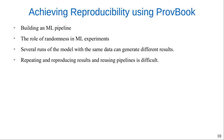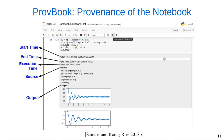Building a machine learning pipeline requires constant tweaks in the algorithms and models and parameter tuning. The role of randomness in machine learning experiments is big, and its use is common in steps like data collection, algorithms, sampling, etc. Several runs of the model with the same data can generate different results. Thus, repeating and reproducing results and reusing pipelines is difficult. To overcome this problem, we developed ProveBook.